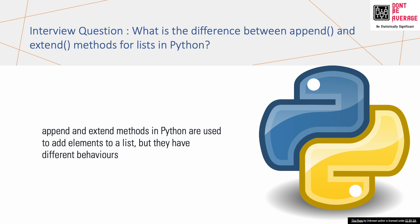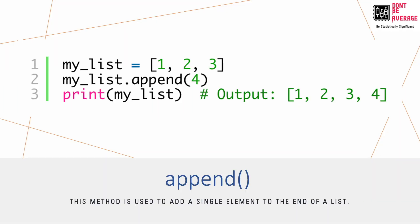The append and extend methods in Python are used to add elements to a list, but they have different behaviors. The append method is used to add a single element to the end of a list. Two things are important: it adds a single element, and the element is added to the end of the list.